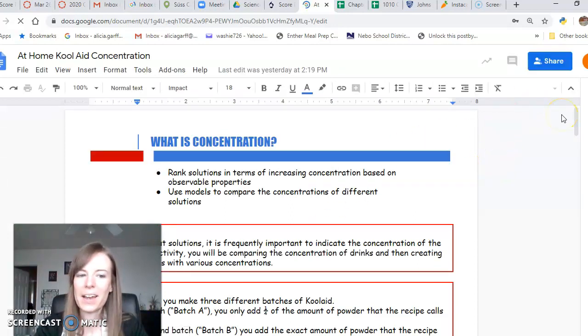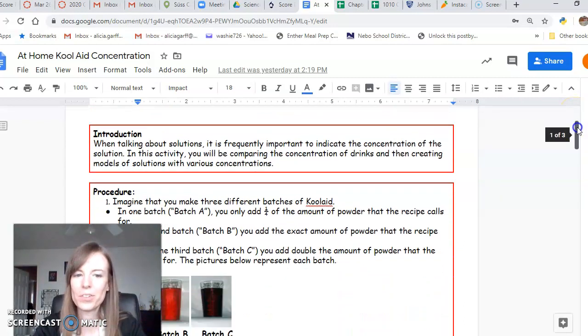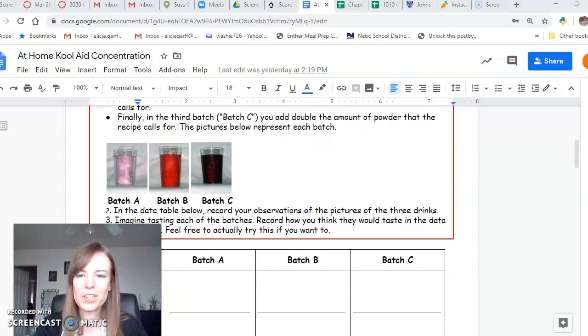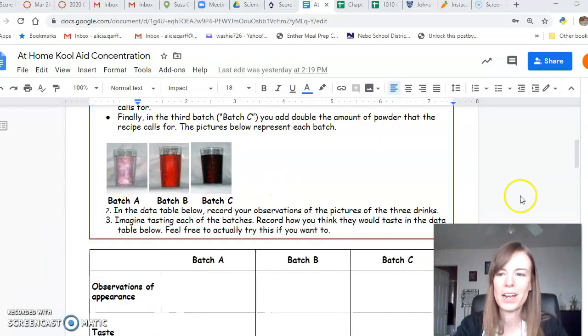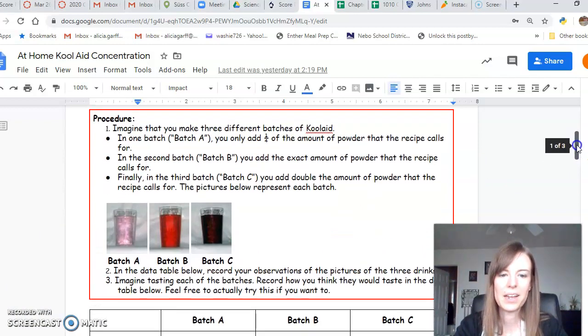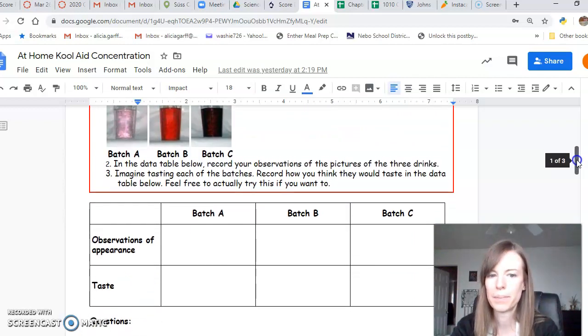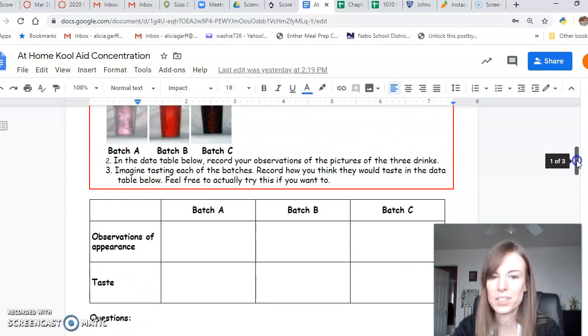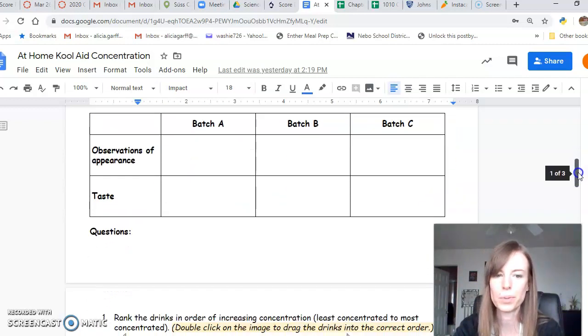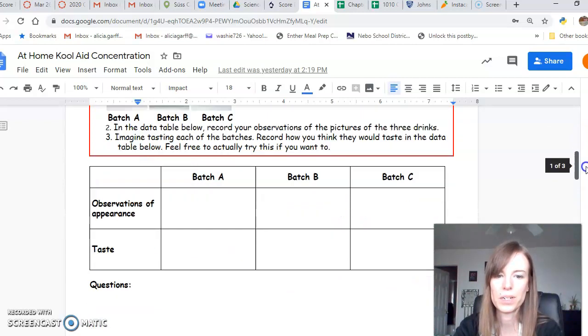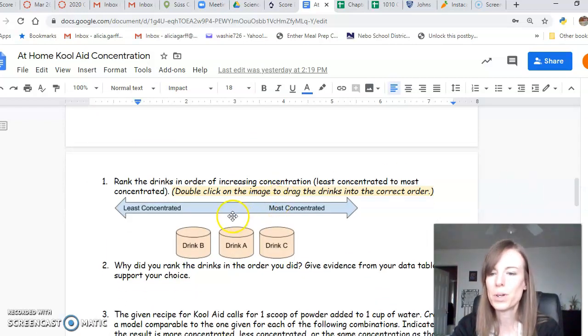Normally in class I would have actually made some Kool-Aid for you, but since you're at home and I don't know if you have Kool-Aid, I just gave you some pictures. So we're saying pretend you made three batches of Kool-Aid: here's batch A, batch B, and batch C. First what you have to do is just answer some questions about them. What observations do you see about each of these cups? Then imagine that you tasted them, what would they taste like? It's all pretty simple. Then you need to rank them from least concentrated to most concentrated.